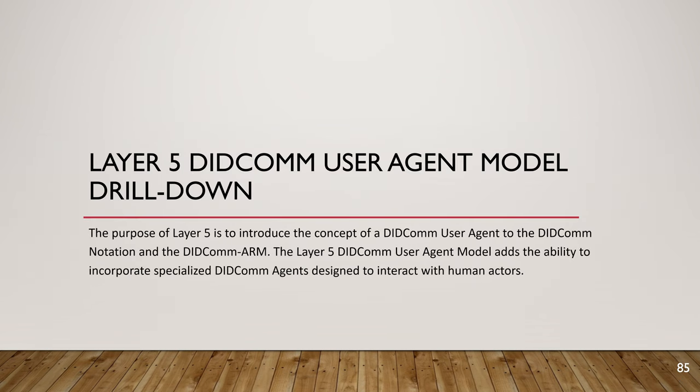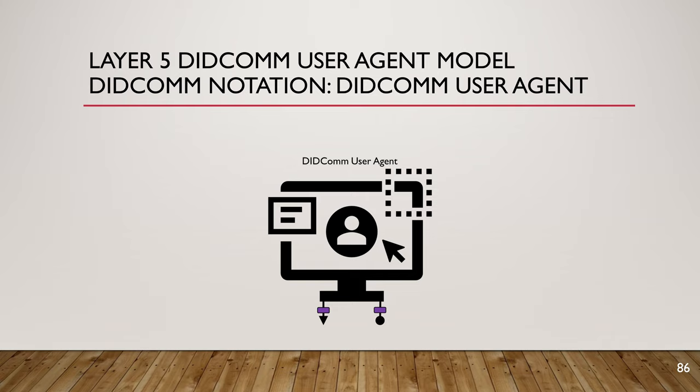Layer five — the DIDCOM user agent model. In DIDCOM notation, a DIDCOM user agent has an origin interface on the left and a service endpoint on the right. It can communicate with ordinary DIDCOM agents — sending queries or messages via the origin interface and receiving information via the service endpoint. Those are authenticated encrypted DIDCOM messages. For example, in a chat application, when a person types a message and clicks send, that goes out on the origin interface to all agents in the group collaboration, and incoming messages arrive on the service endpoint.